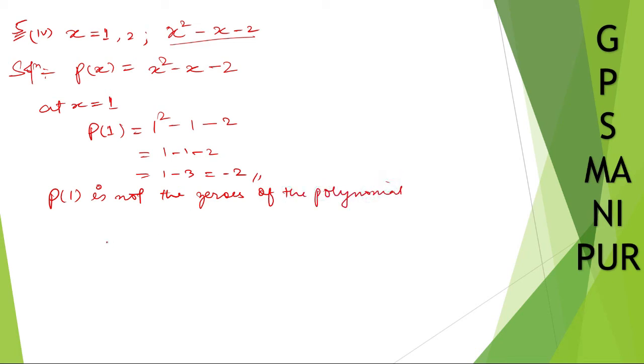Now let us take P of, x is equal to two, because we have given equation is given to us, another point even. So P of two is equal to two squared minus two minus two.